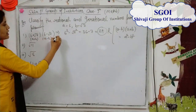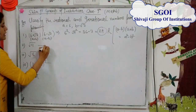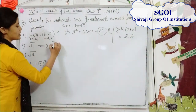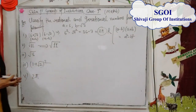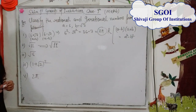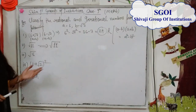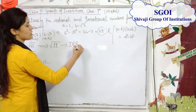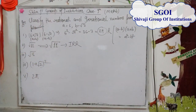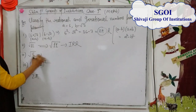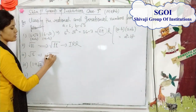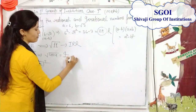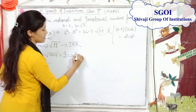The next is root 16. Root 16 means 4 times 4, which equals 4, and 4 is a rational number.